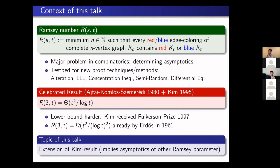The upper bound is due to Ajtai, Komlós, and Szemerédi in 1980, and the lower bound is due to Kim in 1995. Nowadays we have a much better understanding of R(3,t) using the work of Bohman and Keevash, as well as Fiz Pontiveros, Griffiths, and Morris. But today we only focus on the order of magnitude.